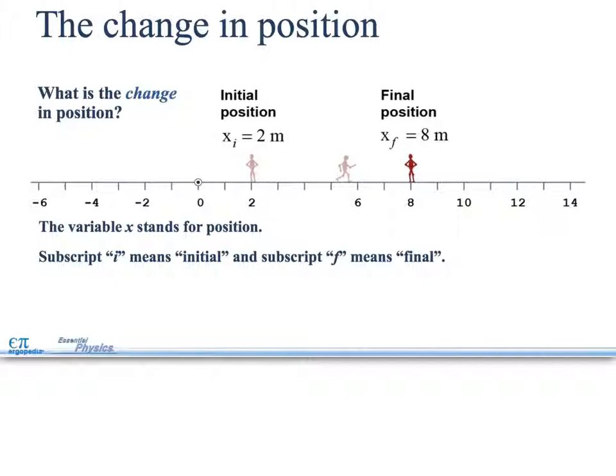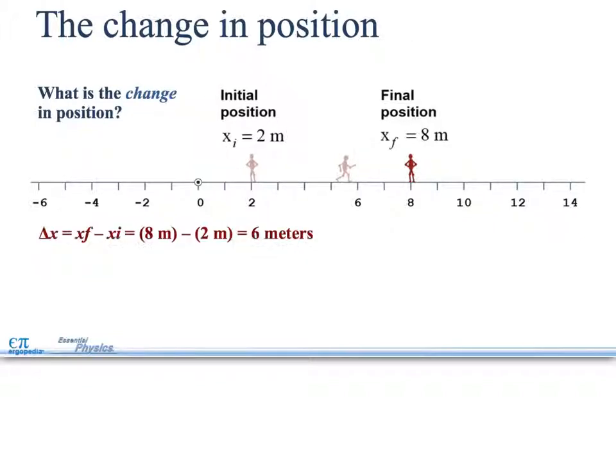What is the change in position, your initial position, and your final position? If you start here and you end here, the variable x stands for the position. And subscript i means initial and subscript f means final. So, for here, our delta x is xf minus xi, or 8 minus 2, which gives us 6 meters.